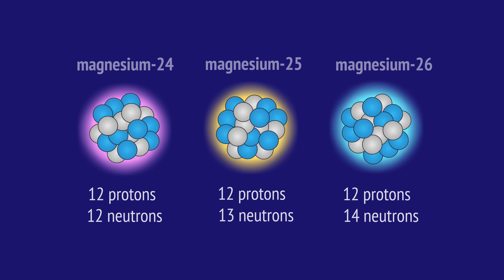Isotopes are atoms with the same number of protons but a different number of neutrons.